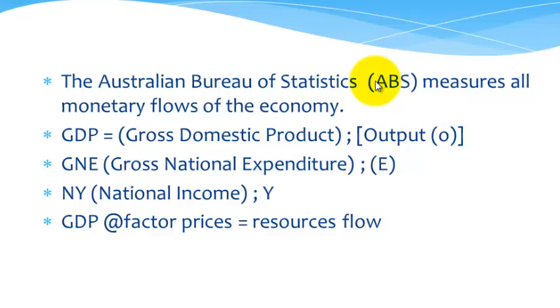Now, these flows have also been labelled by the Australian Bureau of Statistics. GDP (Gross Domestic Product) is the output stream. GNE (Gross National Expenditure) is the expenditure stream. The national income is the income stream. And you notice that the economic symbol for income is Y.